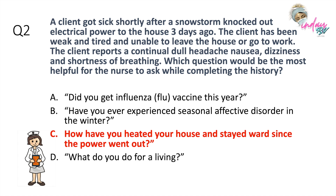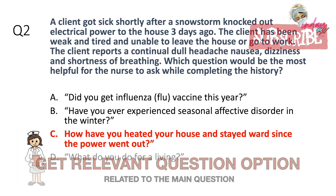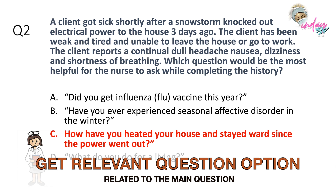The answer is letter C: 'How have you heated your house since the power went out?' — it asks 'how,' which elicits detailed information. The connection to the question is clear: there's a snowstorm, so of course you would heat the house. Letter D — 'What do you do for a living?' — is too far removed; it may elicit some information, but we are doing our secondary survey, not a third or fourth. Letter D is okay, but letter C is the priority.